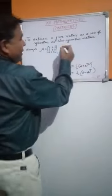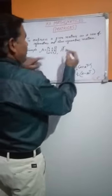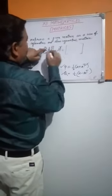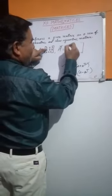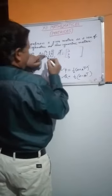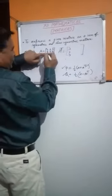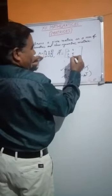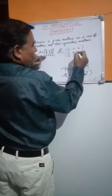We will convert matrix A into rows, so A transpose will be: first row changing to first column — three, two, three; second column — three, two, three; third column — four, five, three; fourth — four, five, three; and third row — two.